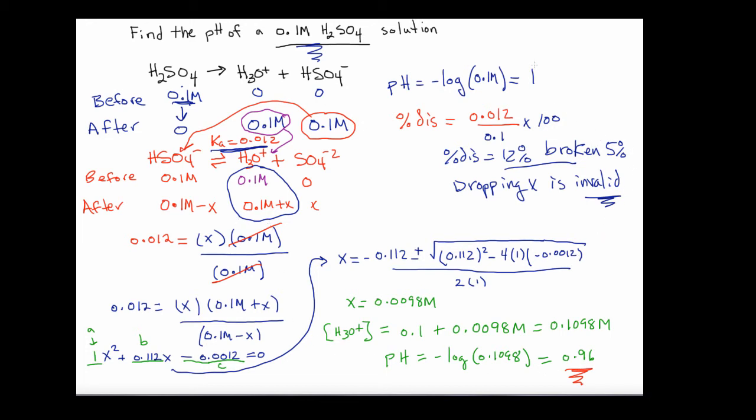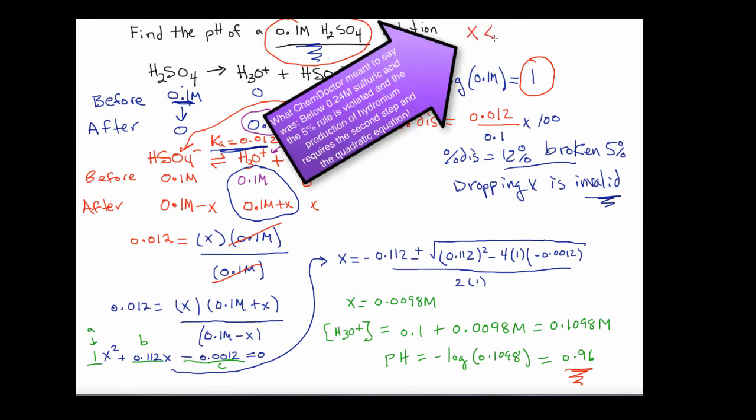You can see when you compare the values that the pH we get by taking the second step into account is lower than the pH we got by not taking into account the second step. When you compare 0.96 to 1, the viewer might be going, well, there's not really that much difference here. But the reason I chose an initial concentration of 0.1 molar H2SO4 is because once we get under, I'll go ahead and put this in words, once we get under X less than 1 molar by at least 0.1, so one-tenth, then the second step becomes important.